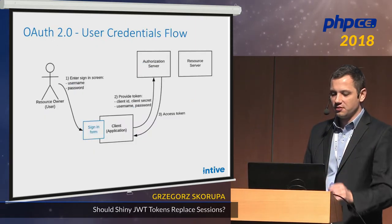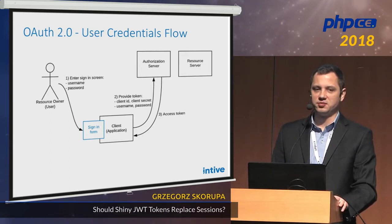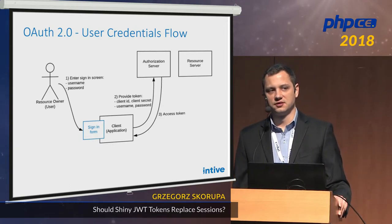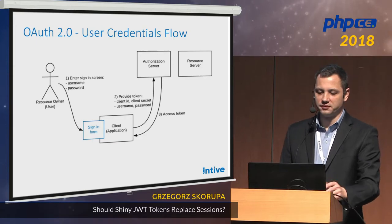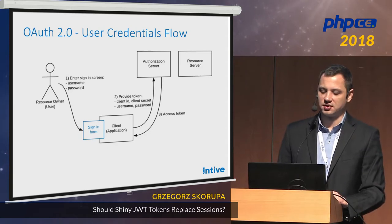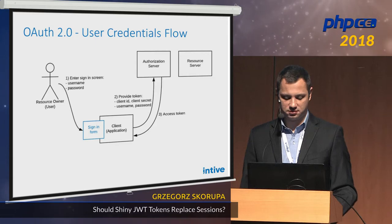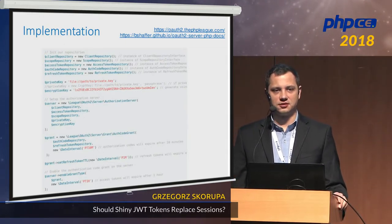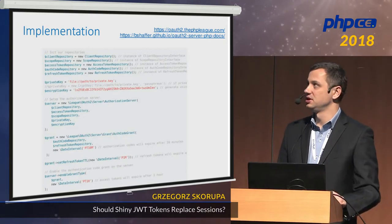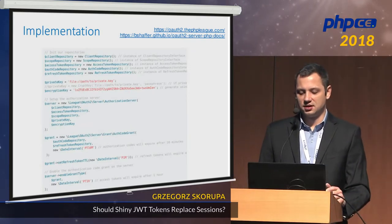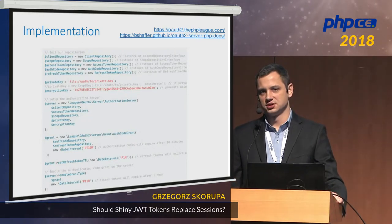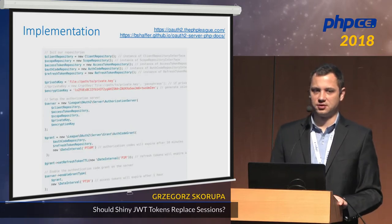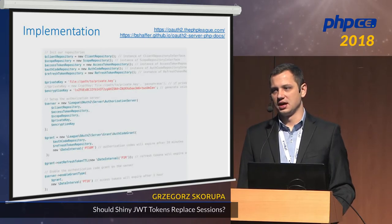In the user credentials flow, you go to a native application, provide your username and password, the application sends those credentials along with its own and receives a token. The drawback is that this application has seen your password, which is why it's used for native applications you trust. Implementing it sounds difficult, but it's actually extremely simple using one of the ready implementations, such as the most popular one from the PHP League. You configure it, define the endpoints to obtain tokens, and you can set it up in one day unless you want something highly custom.